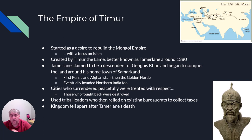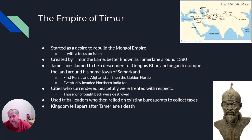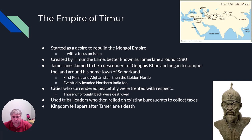Some of the places Tamerlane conquered include Persia, Afghanistan, and northern India — his goal was to rebuild the Mongol Empire. He treated cities that surrendered peacefully with respect, but would completely destroy those that resisted. To show his power, he even built pyramids out of skulls. However, Tamerlane's kingdom did not outlast him — when he died, his kingdom fell apart.